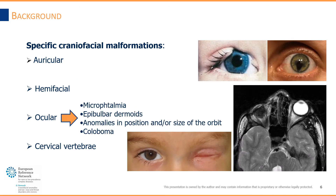Ocular anomalies can also be present. These patients may present micro-ophthalmia, epibulbar dermoids, anomalies in the position and/or size of the orbit, or the presence of coloboma.